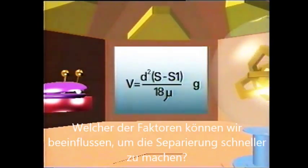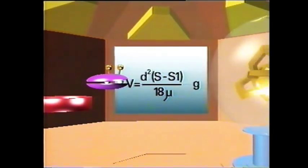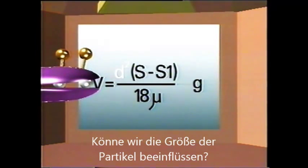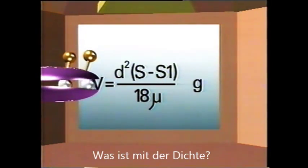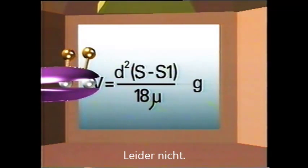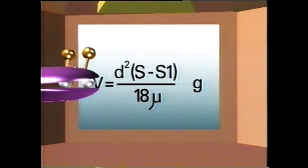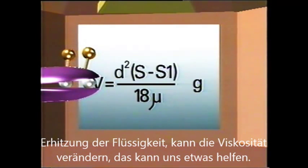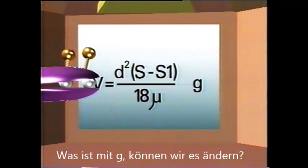That's fine as far as it goes. But is there anything here we can use to speed up the settling process even further? Can we increase the size of the particles? Sometimes, but only slightly. What about the densities? Unalterable, I'm afraid. What about the viscosity of the lighter liquid? Well, heating a viscous oil will make it thinner, so that could help a little.